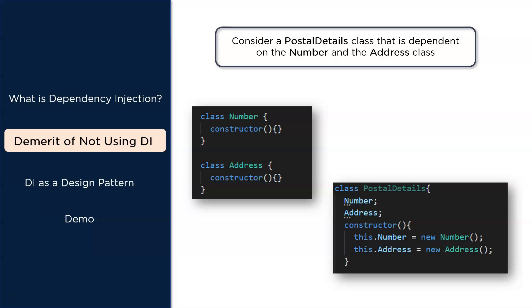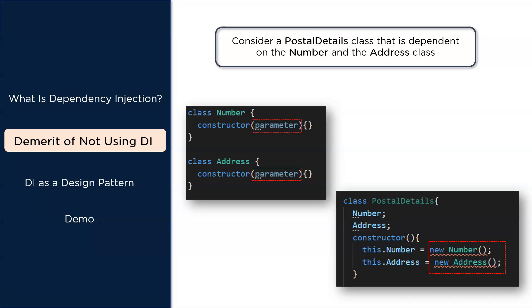Although this looks simple, there's a problem. Assume that the Number and Address class constructors now accept parameters — when we change the Number class, the PostalDetails class gets broken. The first drawback is that the code is not flexible: any time the dependencies change, PostalDetails needs to change as well. The second drawback is that the code is not suitable for testing. If these classes are in turn dependent on other classes, it creates a chain reaction. To overcome this, we use dependency injection.